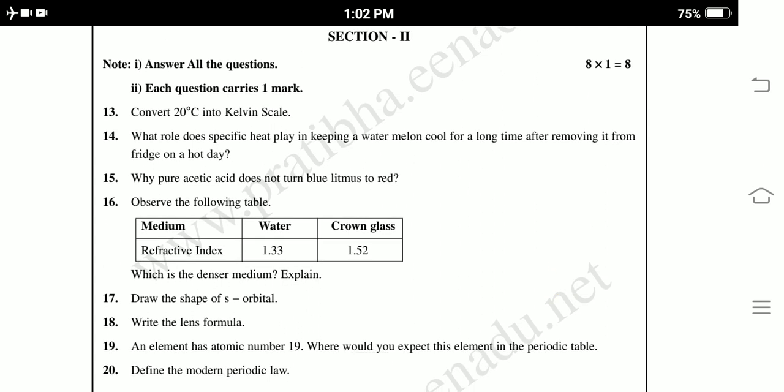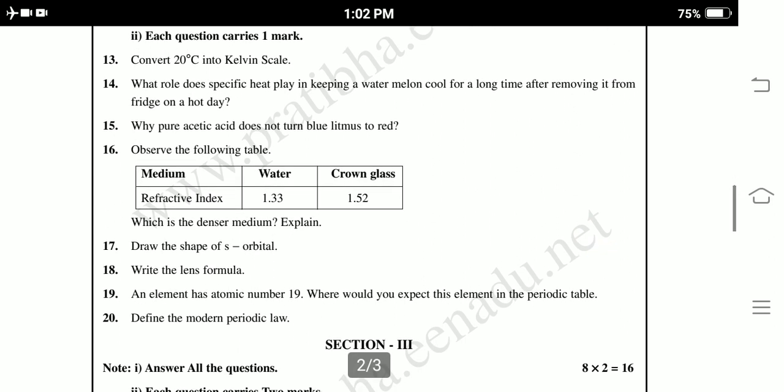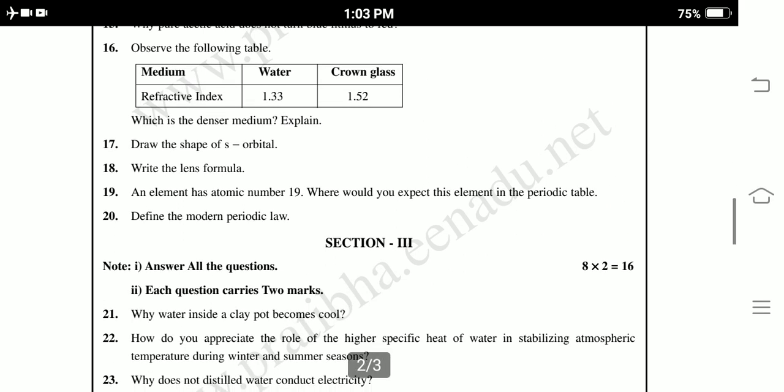Seventeenth one, draw the shapes of S orbital. Eighteen, write the lens formula. An element has atomic number 19. Where would you expect this element in the periodic table? Define the modern periodic law. These are the section two questions.